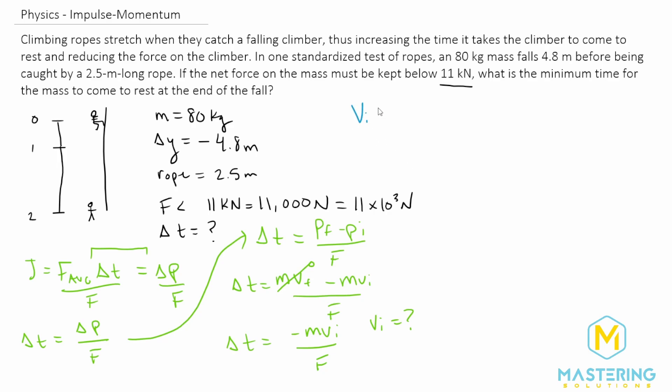So we're going to use velocity initial squared is equal to velocity final squared, which we as we just talked about we know is zero so that can go away, plus two a delta y. We isolate v initial, we square root both sides, so v initial is equal to the square root of two times the acceleration times the change in the y direction.